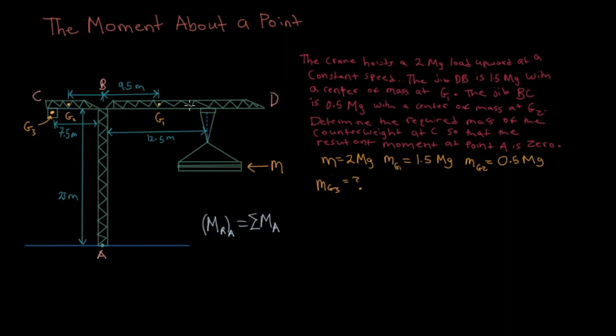mg1, the mass of this jib here, is 1.5 megagrams, and the mass of jib BC is 0.5 megagrams. And so what the question is asking us is we need to find mg3.